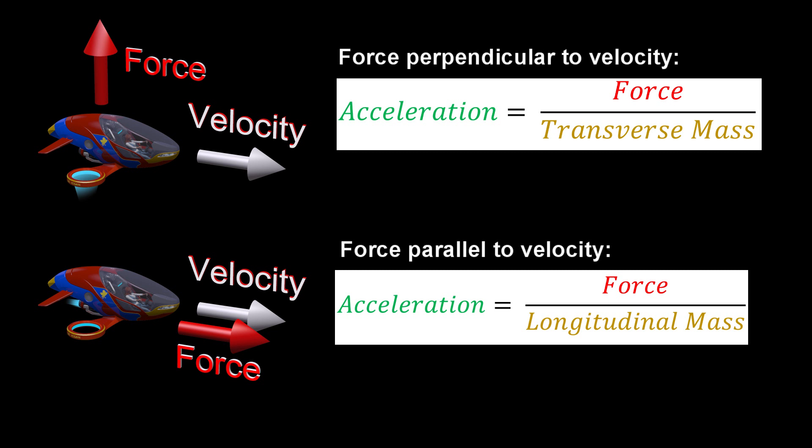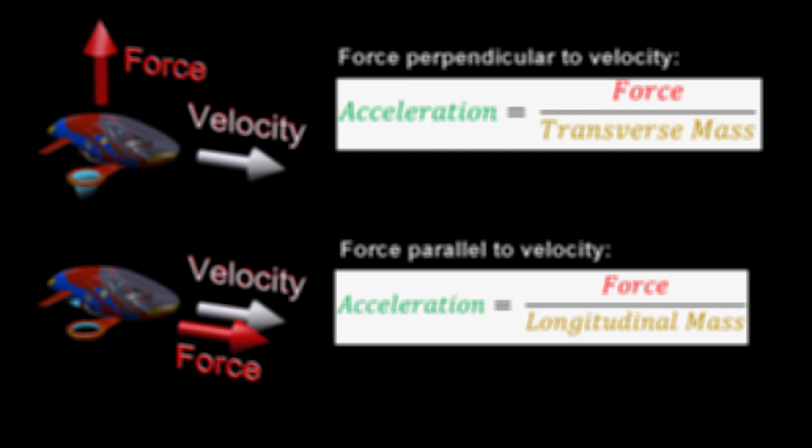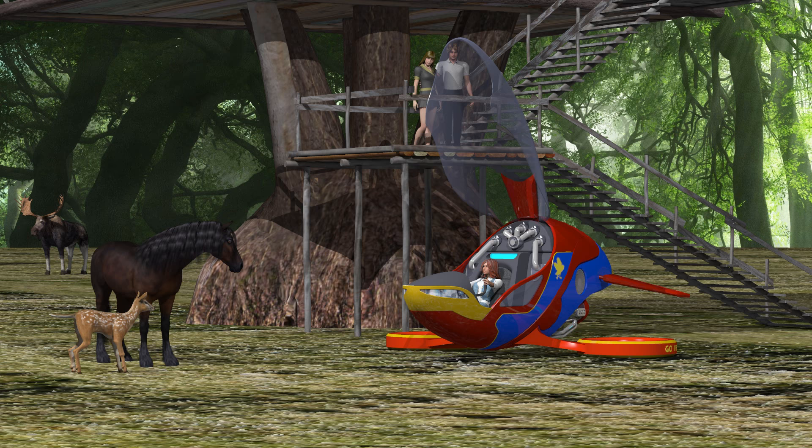On a historical note, this is not exactly the way that Einstein originally described transverse and longitudinal mass, because in our case, we are describing all the forces, velocities, and accelerations from the perspective of the observers who stayed on Earth.